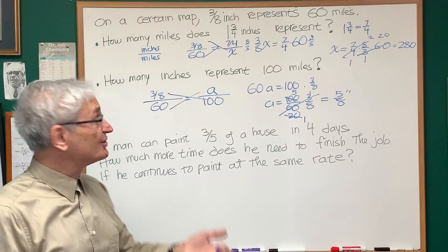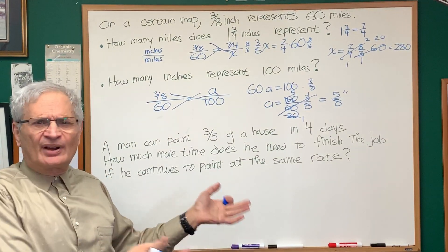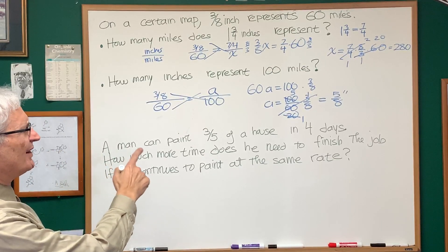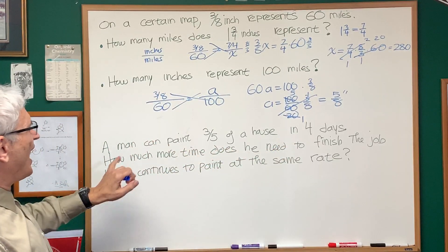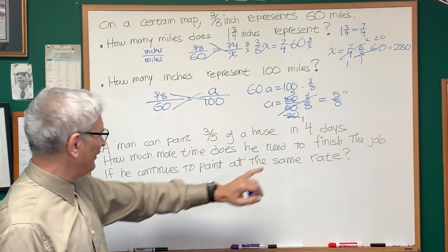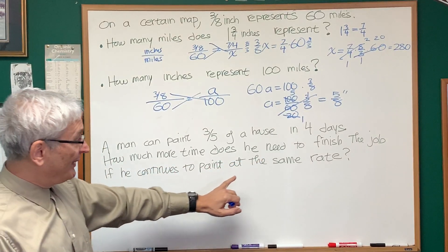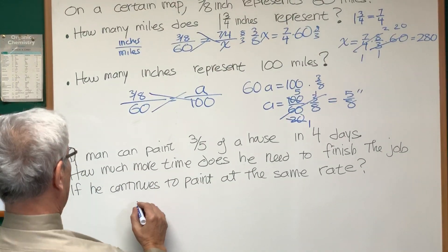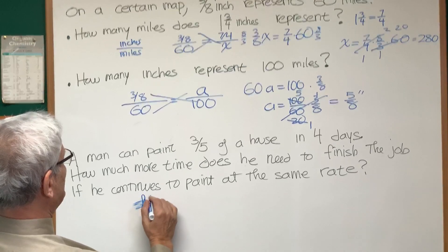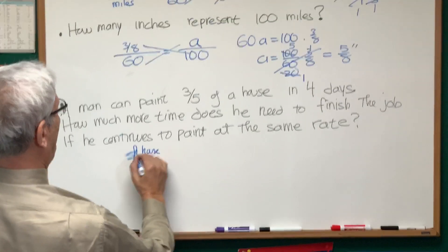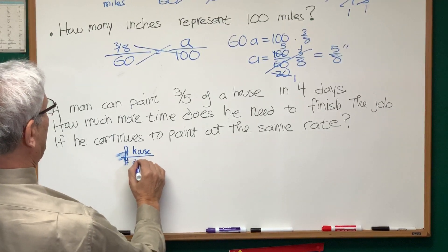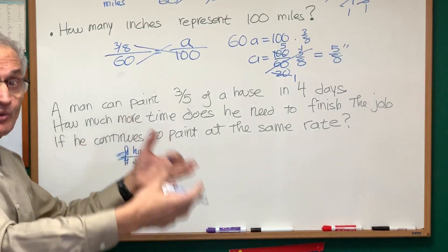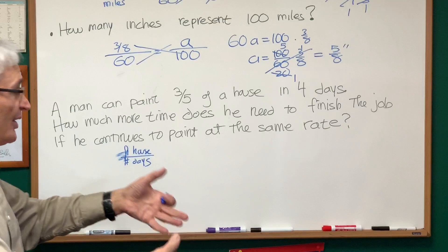Okay, five-eighths of an inch, that's what we're looking for. Very similar problem. Let's take a look at this third one. A man can paint three-fifths of a house in four days. How much more time does he need to finish the job if he continues to paint at the same rate? All right. What we're going to do is fraction of a house over number of days. And that's the standard ratio we're going to use throughout this problem to evaluate the proportion.